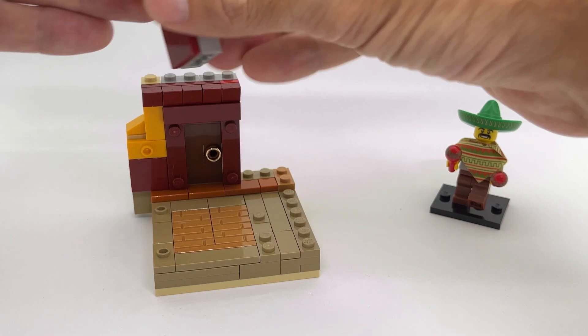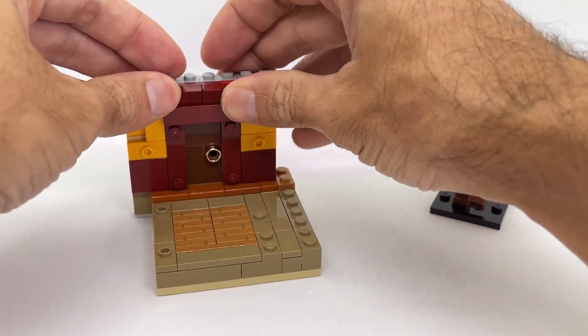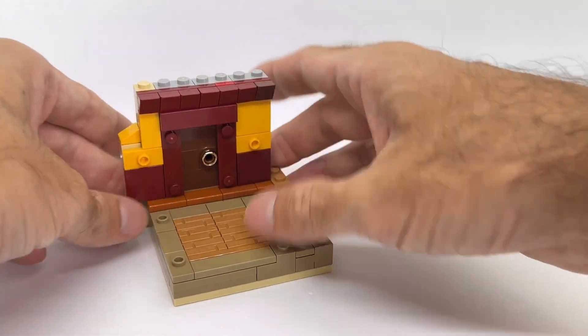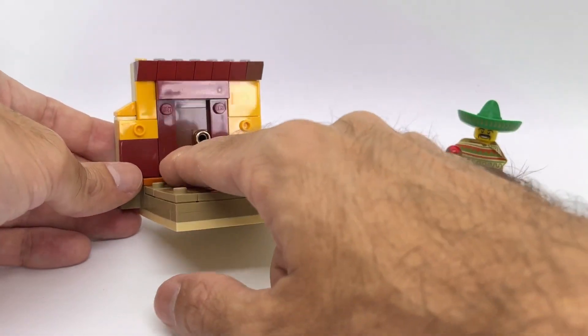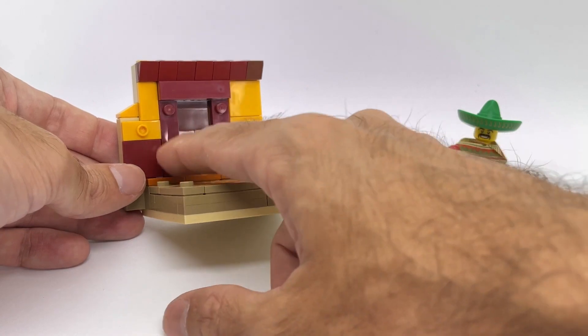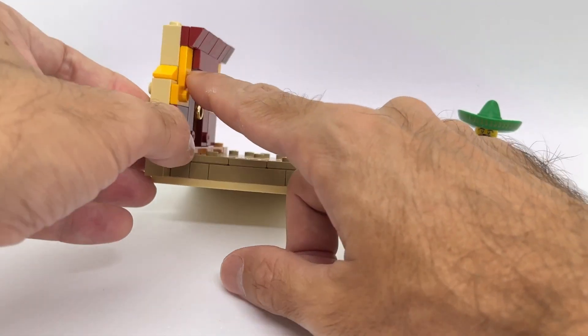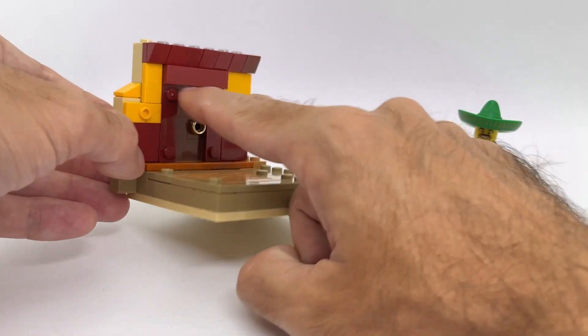I picked up some reference images for some sort of Mexican style buildings and I like this color scheme. So you can see I'm having some studs here on the side to have a little bit of additional detail around the door and I added one more tile on the top.